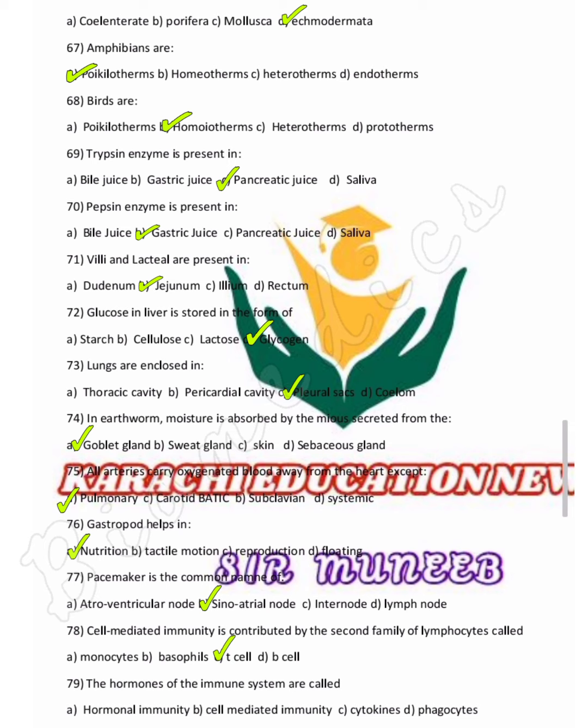The hormones of the immune system are called cytokines. On page 370, you will find the heading of cytokines described as immune system hormones.